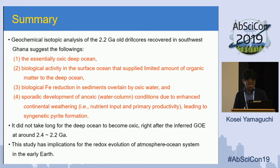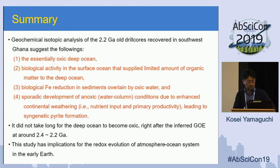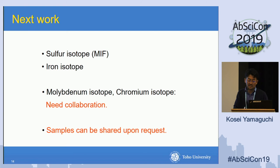In conclusions, geochemical and isotopic analysis of 2.2 GA samples from Ghana suggest the following: an essentially oxic deep ocean, with carbon provided to the deep ocean from the surface ocean, iron reduction occurring, and sporadic development of anoxic euxinic water columns leading to syngenetic pyrite formation. The major conclusion is that it did not take long for the deep ocean to become oxic right after the inferred GOE at around 2.4 to 2.2 GA. This study has implications for the redox evolution of the atmosphere-ocean system in the early Earth. Future work would include measuring sulfur isotope compositions, iron isotopes, and chromium isotopes — for which I would like collaborations. Samples can be shared upon request. Thank you for your attention.